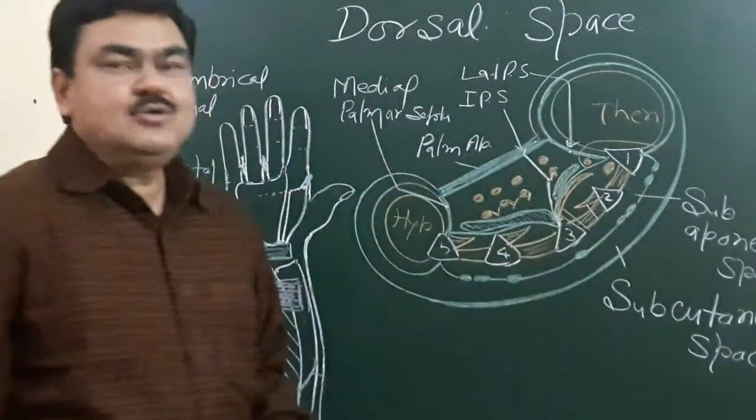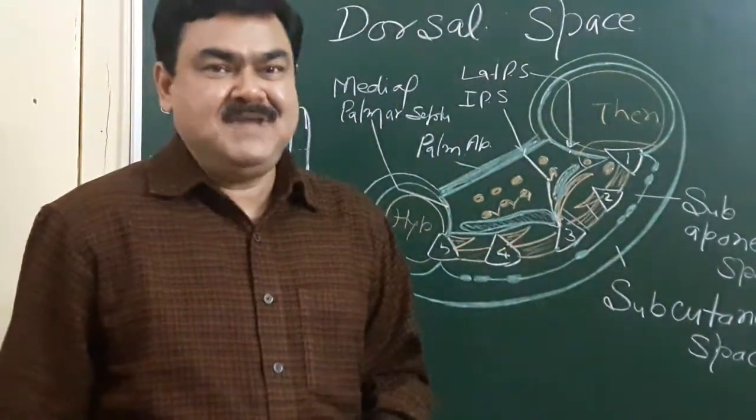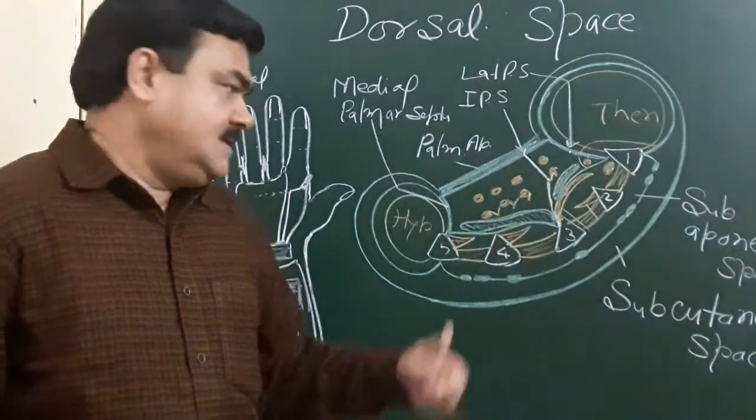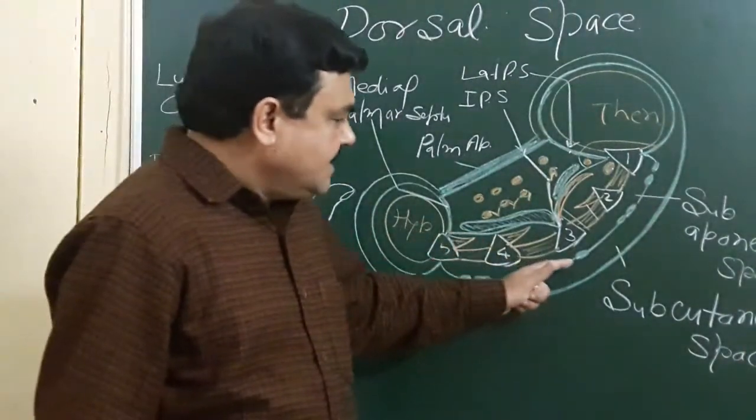This space is also known as the sub-tendinous space because it lies deep to the extensor tendons.